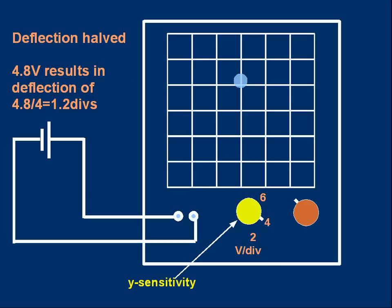And here's what would happen. Going from 2 volts per division to 4 means the deflection will be halved. Instead of standing for 2 volts, each division represents 4 volts. We could actually work out the amount of deflection. 4.8 volts is the known voltage. It results in a deflection of 4.8 volts would have to divide by the number of volts per division. And that would tell us we've got 1.2 divisions. So that spot would have moved up 1.2 divisions.